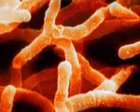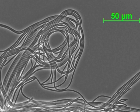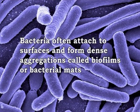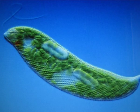For example, the actinobacteria — filamentous bacteria are often surrounded by a sheath that contains many individual cells. Certain species of the genus Nocardia even form complex branched filaments similar in appearance to fungal mycelia. Bacteria often attach to surfaces and form dense aggregations called biofilms or bacterial mats. These films can range from a few micrometers in thickness up to half a meter in depth and may contain multiple species of bacteria, protists and archaea.